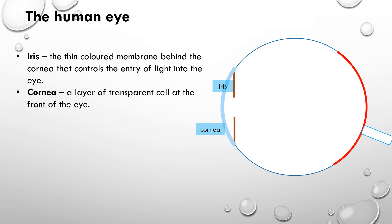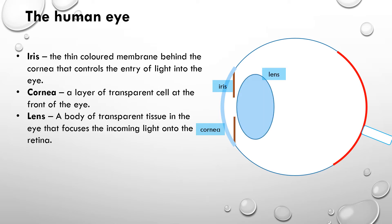We have the cornea, which is a transparent layer of skin cells that let light travel through but protect the inside of the eye. We have the lens, which is a body of cells that are also transparent that let light through, but this lens can change shape in order to bend the light so we can focus the light on the back of the eye onto the retina.